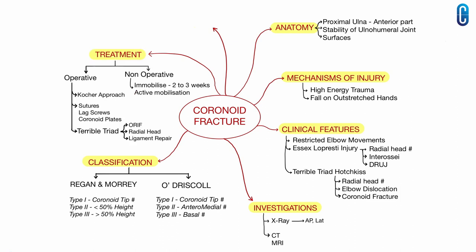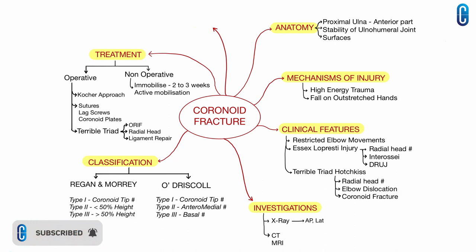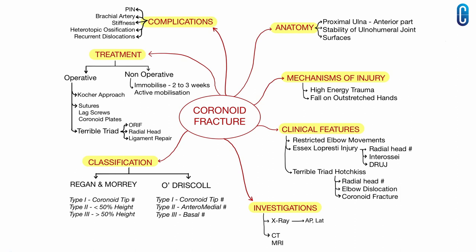About the treatment: for undisplaced fractures, non-operative management may be used, involving immobilization for 2-3 weeks followed by active mobilization. Operative management is given for displaced fractures. We use the Kocher interval for reaching the fracture site, and the options include sutures, lag screws, or coronoid plates. For a terrible triad injury, we do ORIF of the coronoid along with fixation or replacement of the radial head and ligament repair. Finally, the complications include posterior interosseous nerve palsy, brachial artery injury, elbow stiffness, heterotopic ossification, and recurrent dislocations.